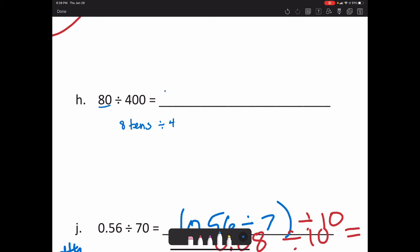So the first thing we're going to do is we're going to do 8 tens, which is 80, divided by 4. And then we're going to take that result, and we're going to divide it again by 100, because 4 times 100 is 400. So that's how we're splitting up that 4 and the 100, and then we're just dividing it separately.